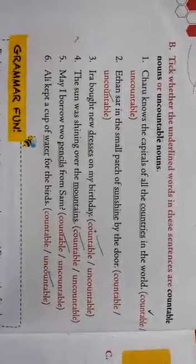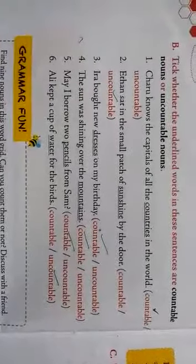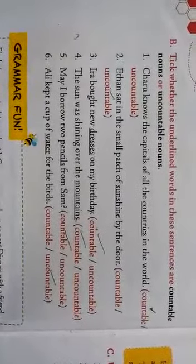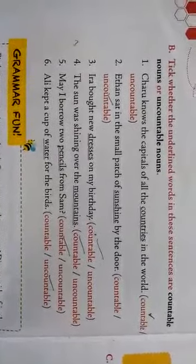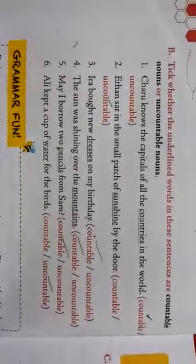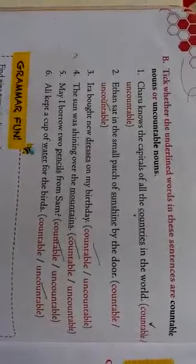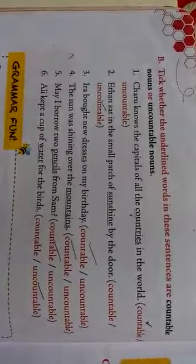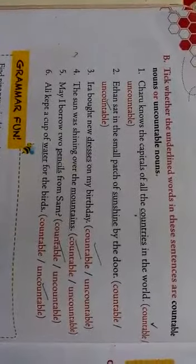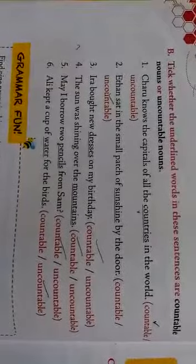Fifth one: May I borrow two pencils from Sam? What I want, I want to borrow, that is pencils from Sam. So pencils we can count, it is a countable noun. Sixth one: Ali kept a cup of water for the birds. Water is a liquid and we cannot count the water drop by drop, so it is an uncountable noun.